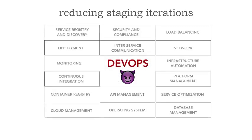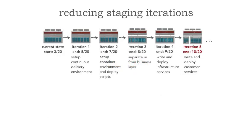That four months is going to be consumed making product choices in every one of these categories. That level of automation is absolutely required for microservices because of the sheer volume of the number of services. It's not feasible to manually manage the parallel development, testing, release, and monitoring of several hundred separately deployed services. Most teams can get to around 10 or 12, but at that point you need that level of automation. So we see four months consumed just in setting that up — and that's a staging iteration.